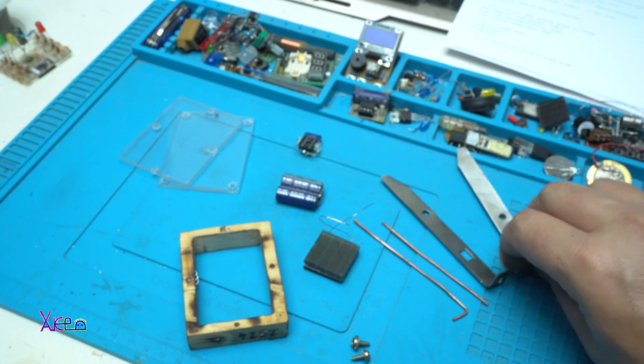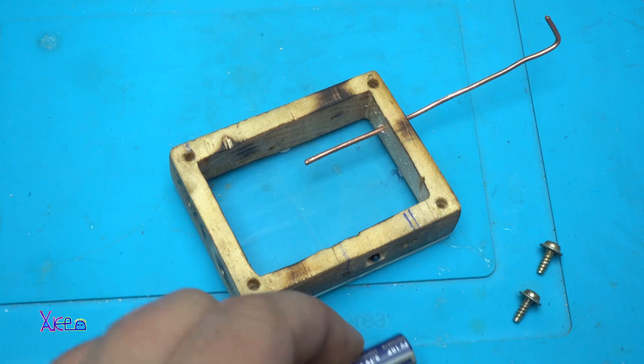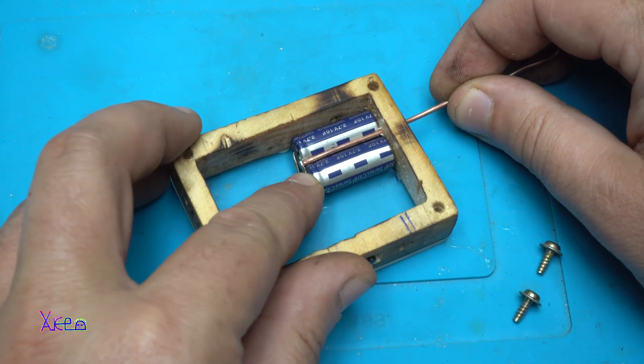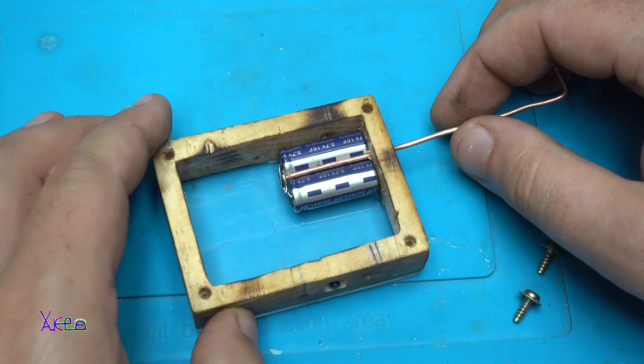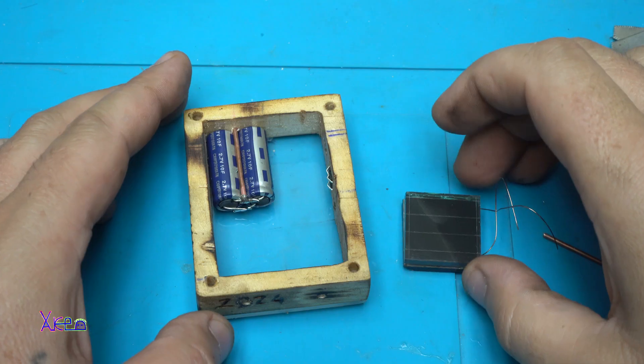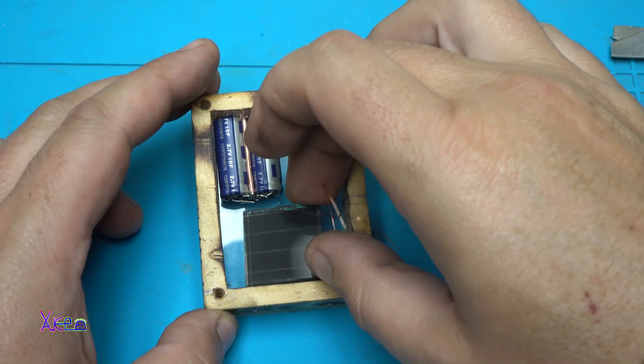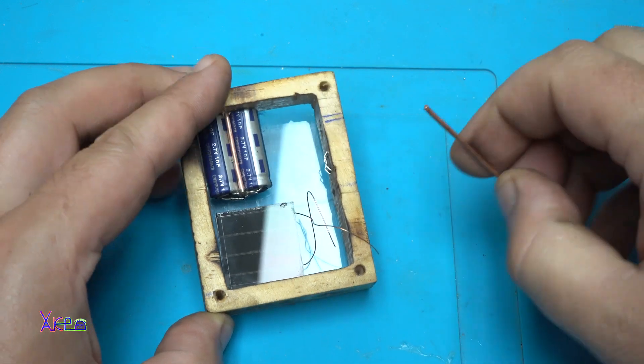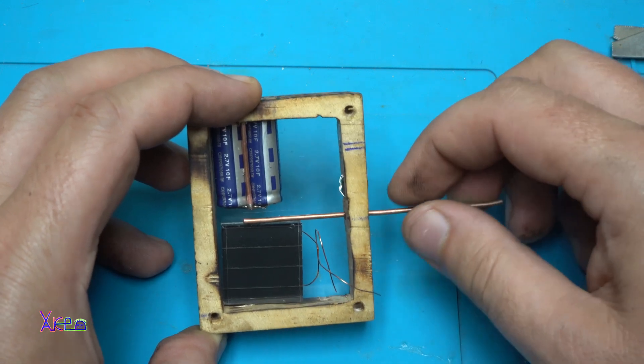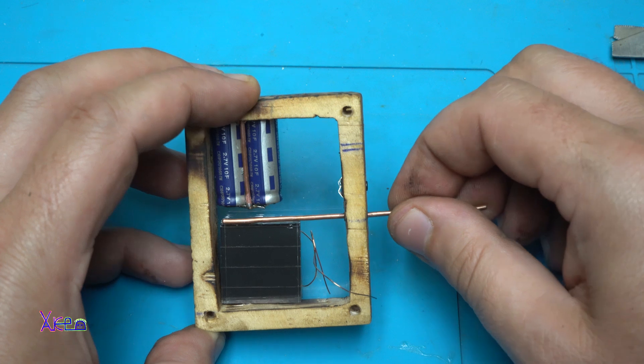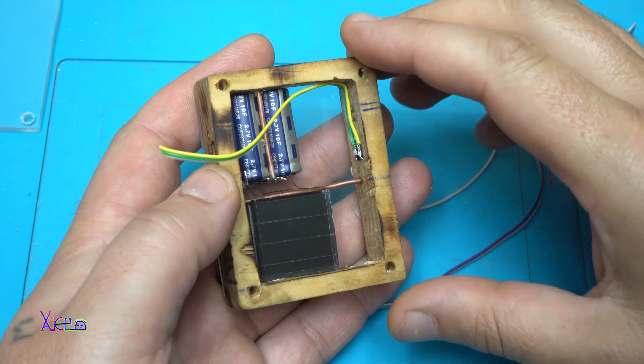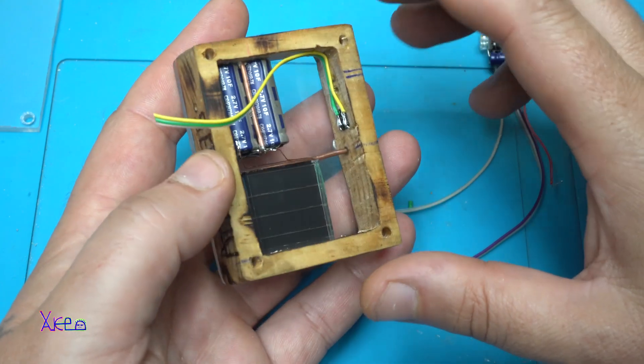I begin with building the project by adding first the super capacitors and fixing them with this small solid copper wire. Next I add the solar cells, double-sided solar cells, and also fix them with solid copper wire. So everything will be tight and I'm not using any super glue or hot glue in this project.